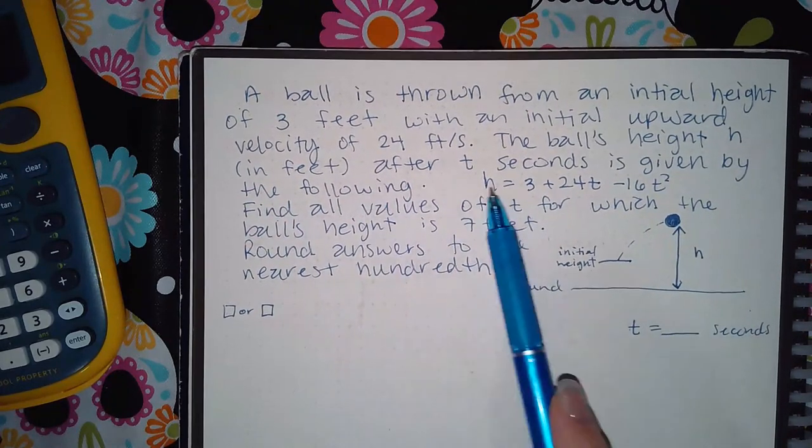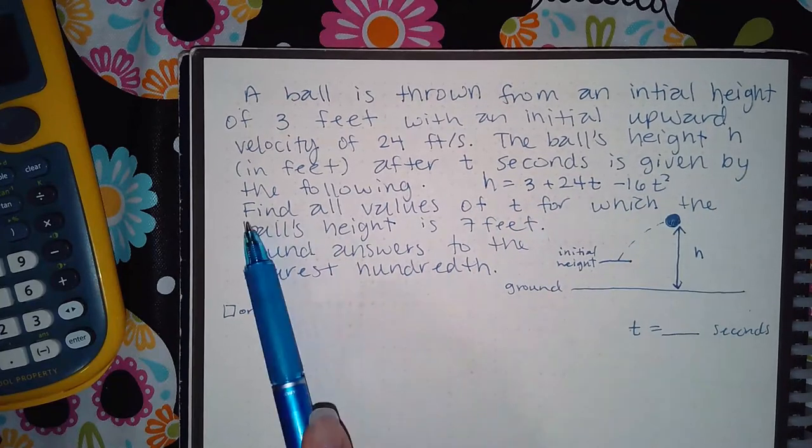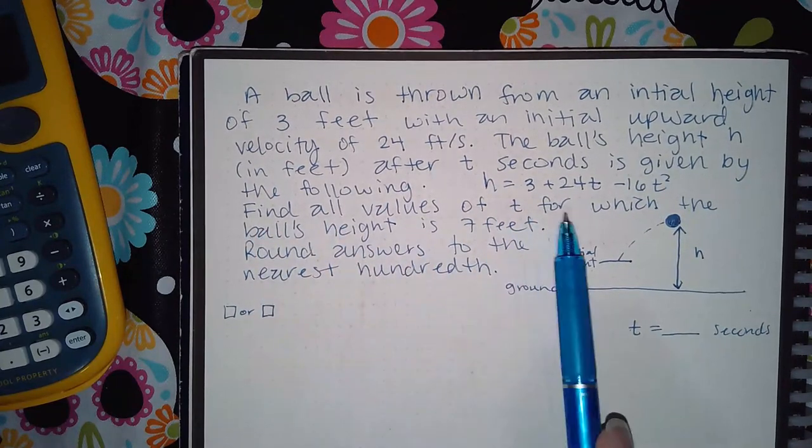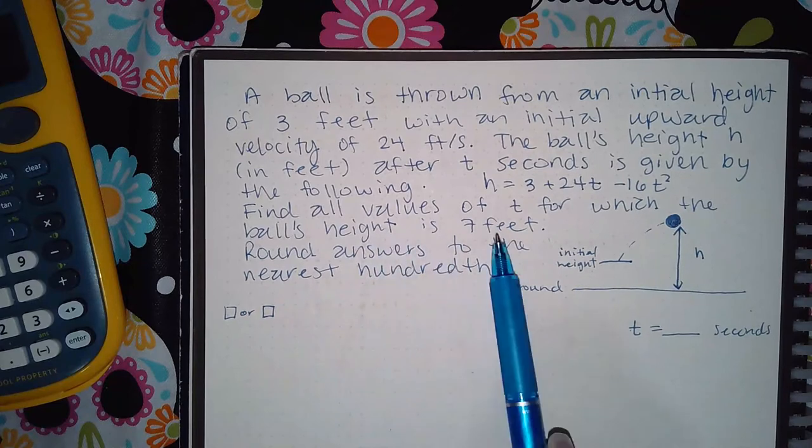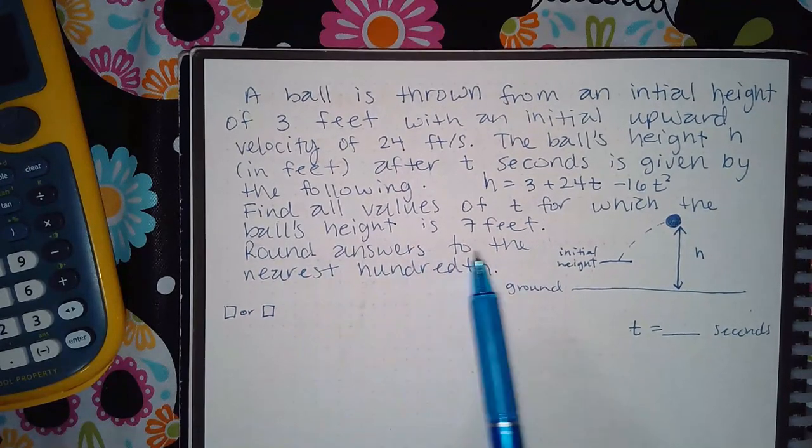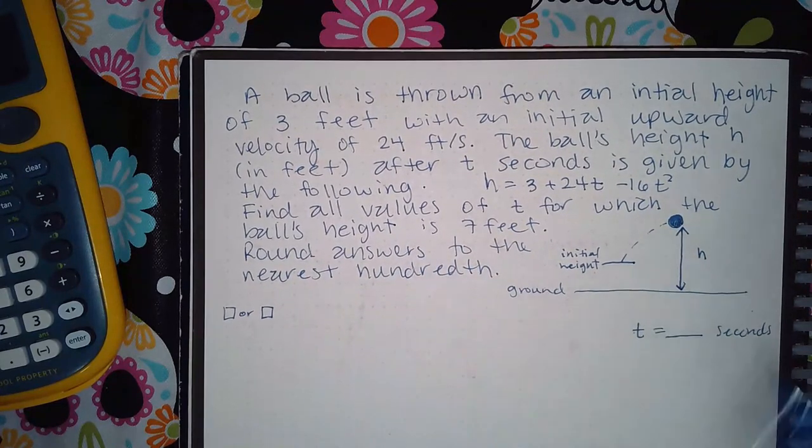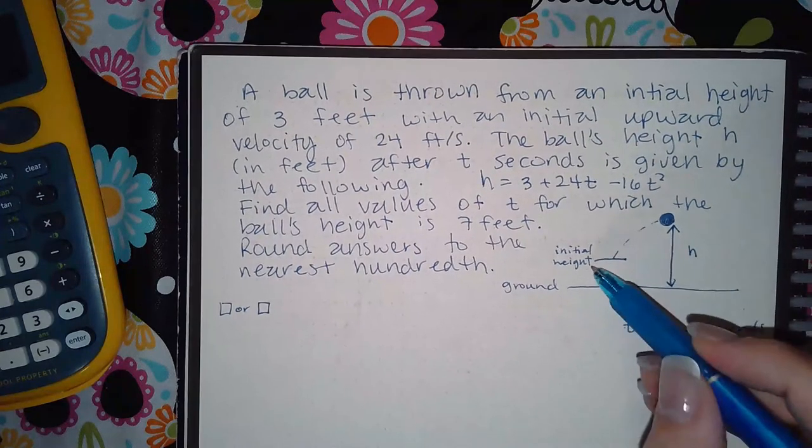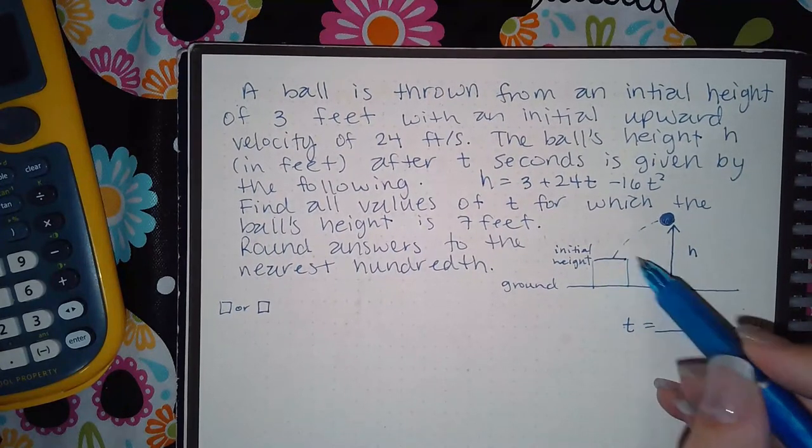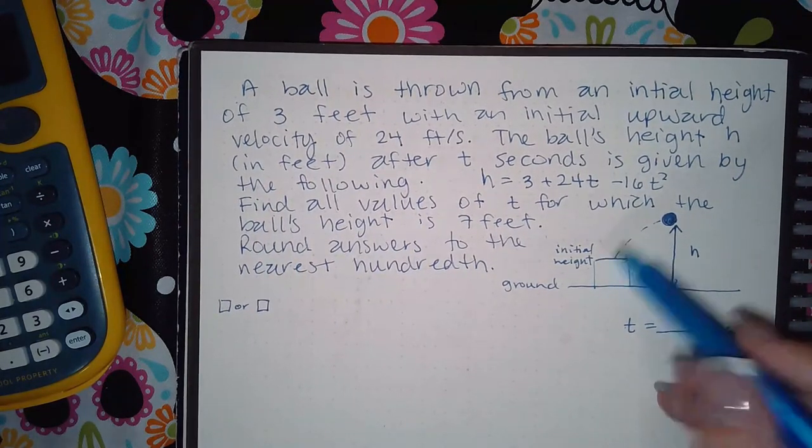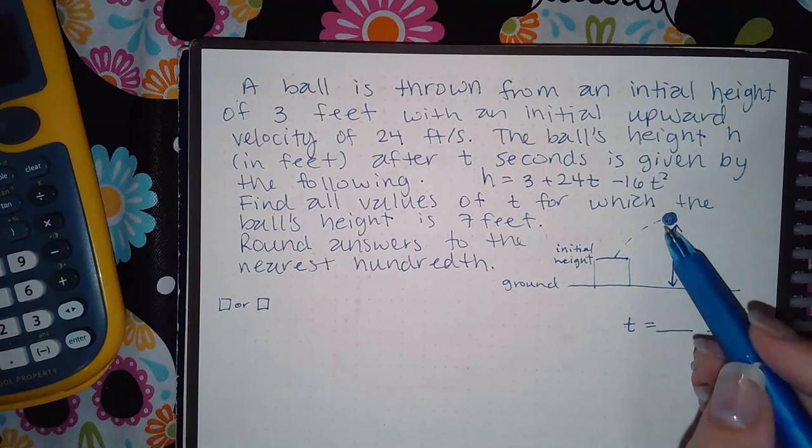They give us this equation here. Find all values of t for which the ball's height is 7 feet. Round answers to the nearest hundredth. So here's the initial height, maybe I was on top of a building or on top of a step something like that, and then they threw the ball.